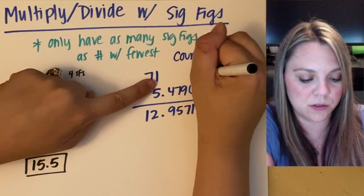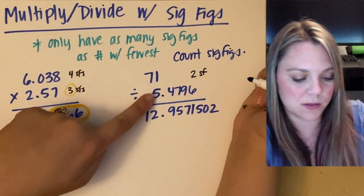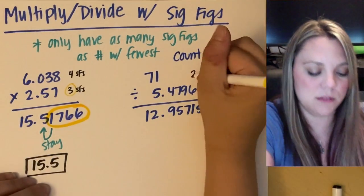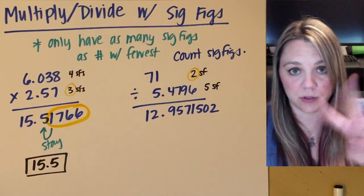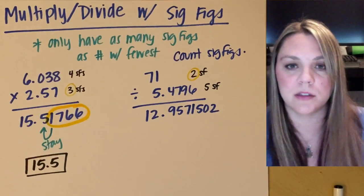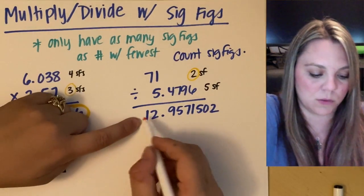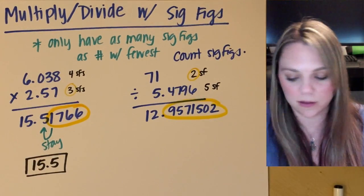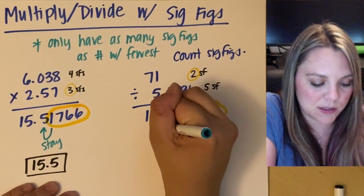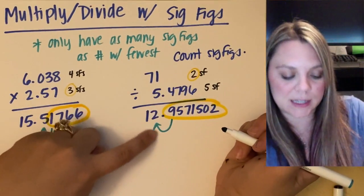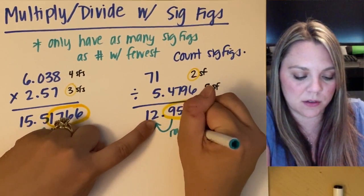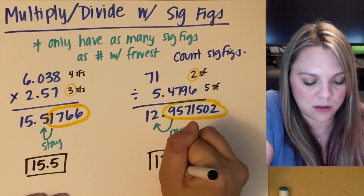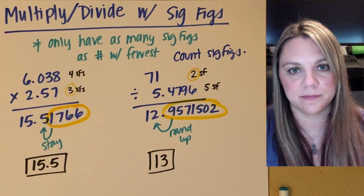So I go through my numbers that I started with. This one has one, two sig figs. This one has one, two, three, four, five sig figs, which means my answer can only have two sig figs, the smallest number, right? So one, two sig figs. Anything beyond that is a big nope. All right? And I check and see if this is going to round up. The nine is going to make the two round up, which means my answer should be 13.